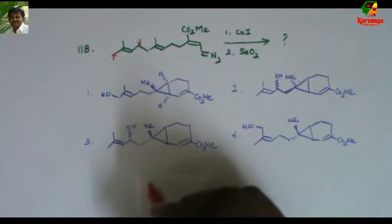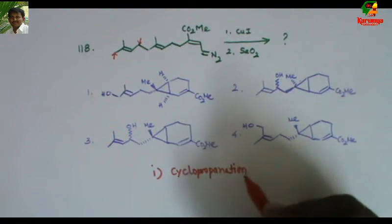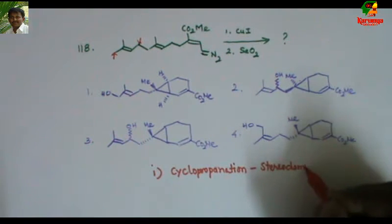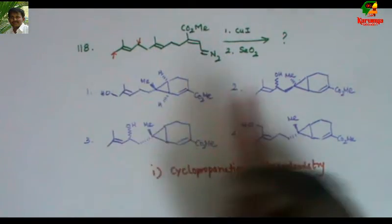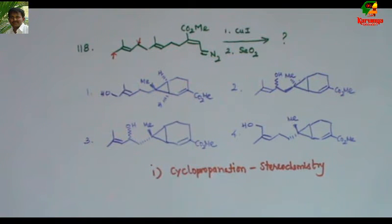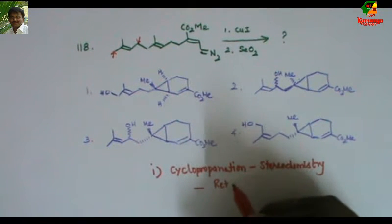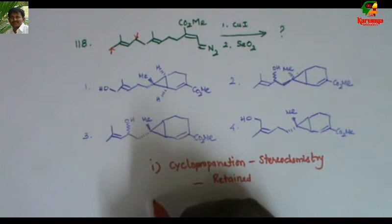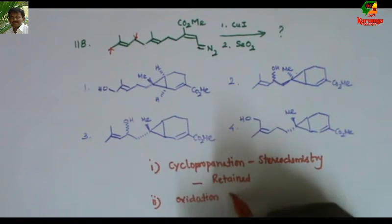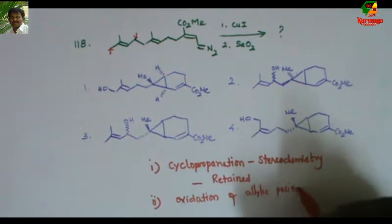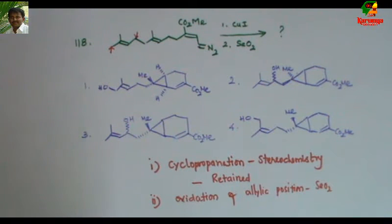In order to solve this, first you should know cyclopropanation stereochemistry. Cyclopropanation reaction is not important for this particular problem because all the products are cyclopropane. But what about the stereochemistry? During cyclopropanation, stereochemistry is retained. Second concept: oxidation of allylic position using selenium dioxide. If you know this, you can easily solve the problem.